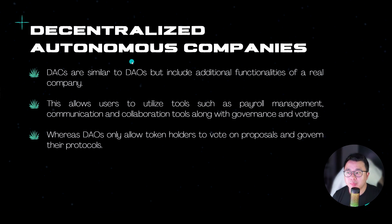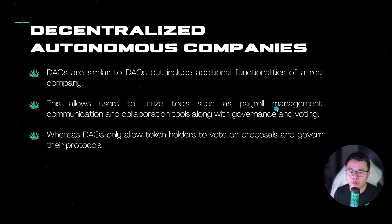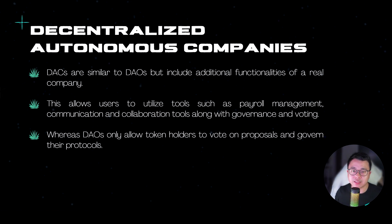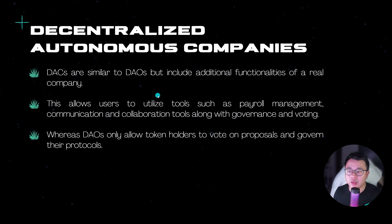What I find really interesting about DAC and MATIS's vision is that they're actually more business-facing. A lot of their built-in features are catered towards organizational tools like payroll management, communication, collaboration, along with standard governance and voting. This makes it realistic for existing businesses to move their operations on-chain with all these utility features, creating more intrinsic demand from real-world adoption compared to ecosystems that don't have these things built in.